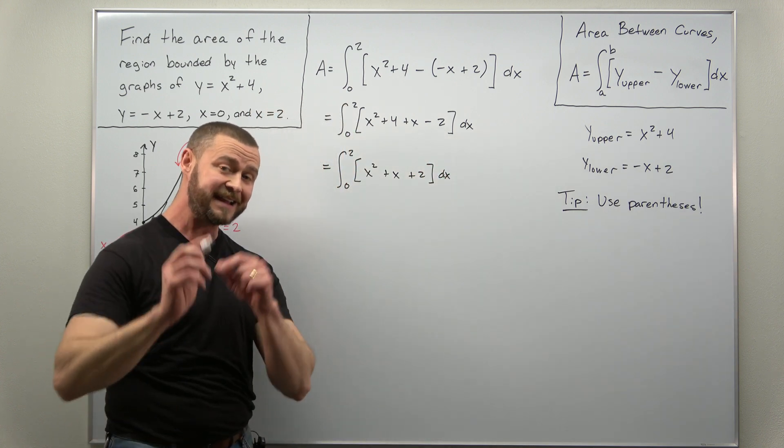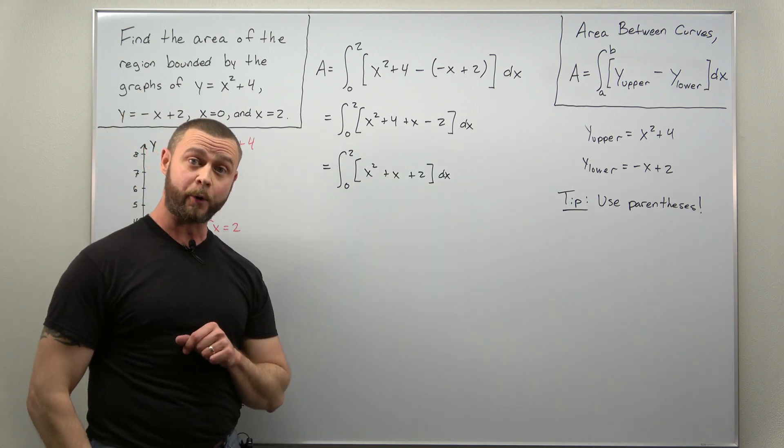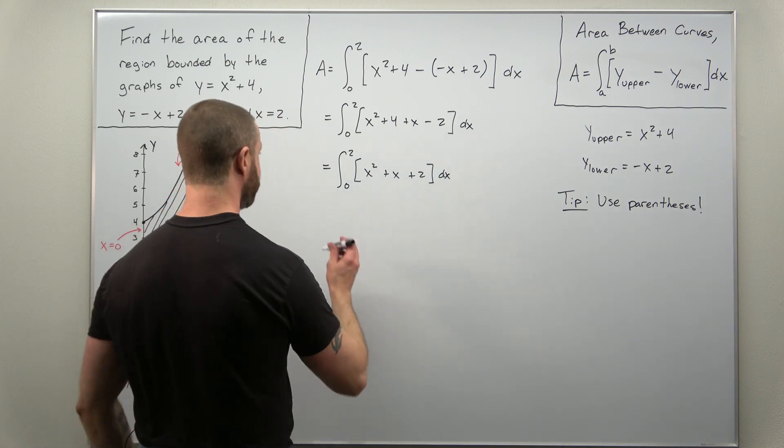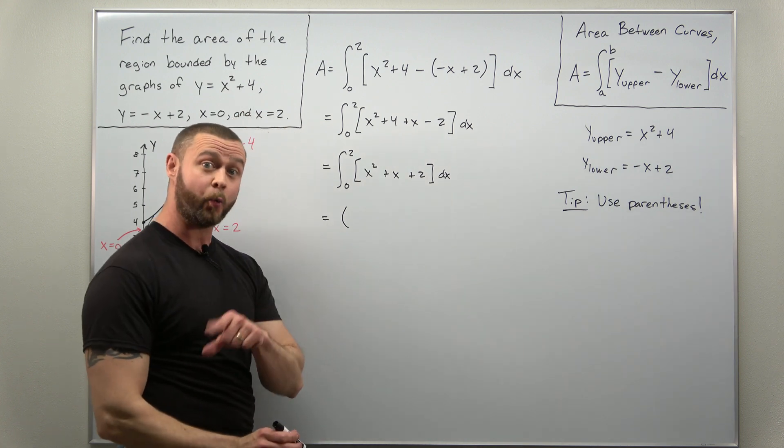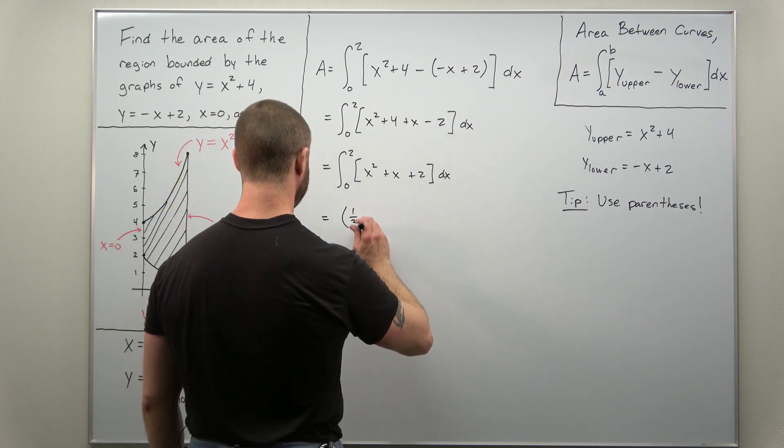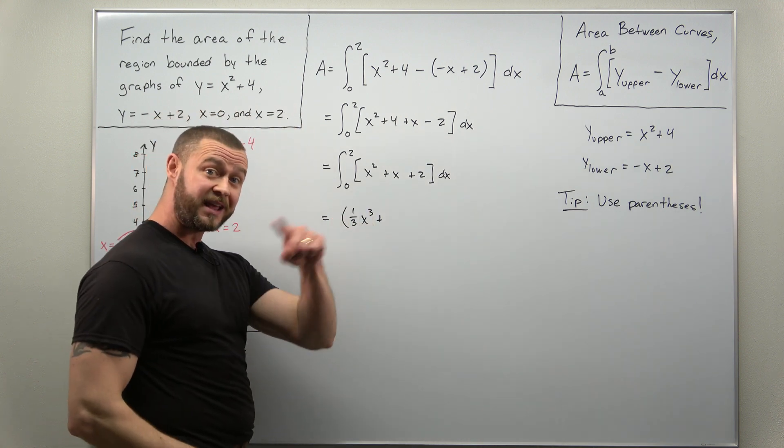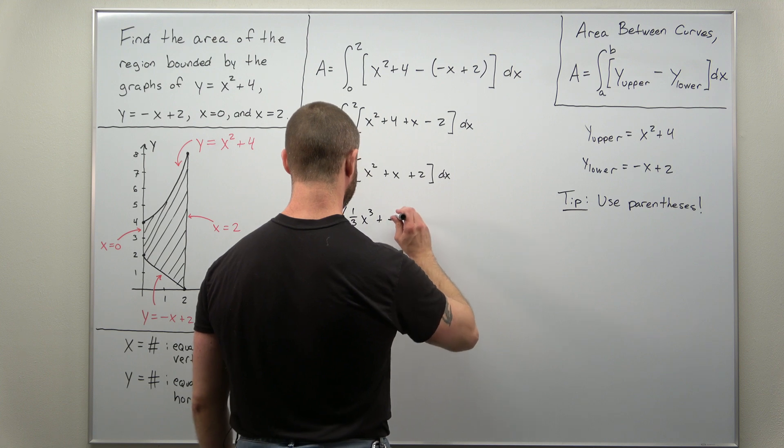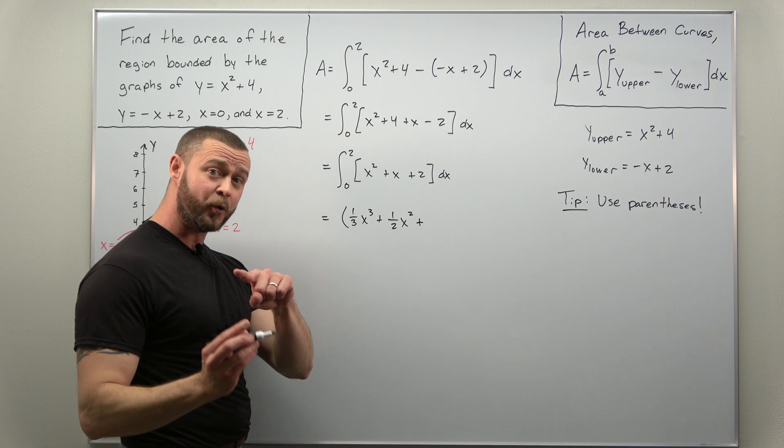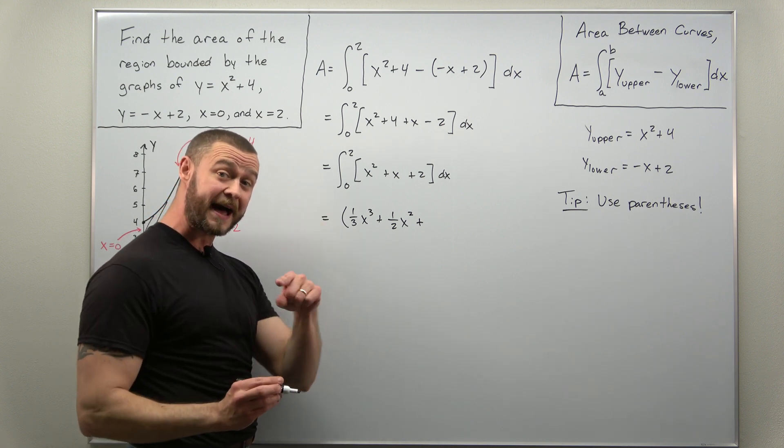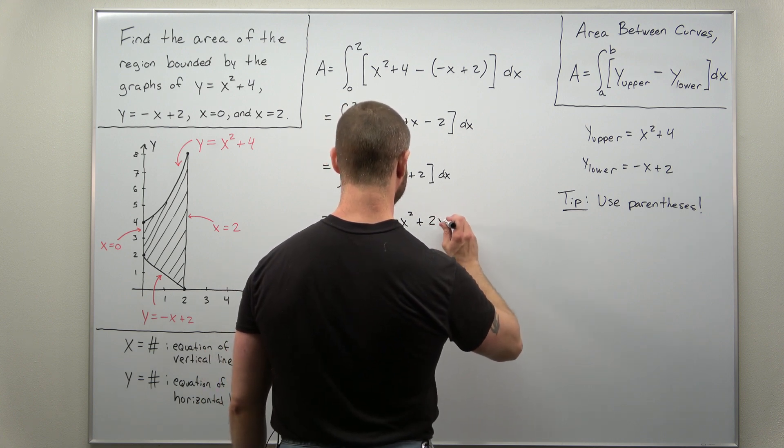And now we can find an antiderivative very easily, integrating term by term, applying the power rule. So if we go ahead and do that, applying the power rule to each term, x squared will integrate to one-third x cubed. x will integrate to one-half x squared.